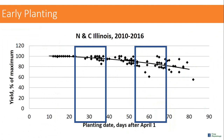Planting date is very critical for establishing a high-yielding environment. The number one message going into the 2018 crop was to plant beans early. Once we get into mid-May and later, our percent of maximum yield starts to taper off. This is based on multiple years of data from North and Central Illinois through Dr. Nassinger's program, with variability from year to year.